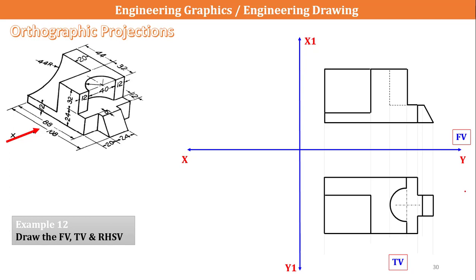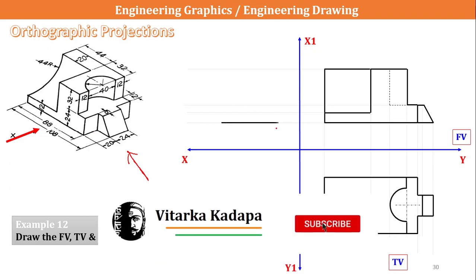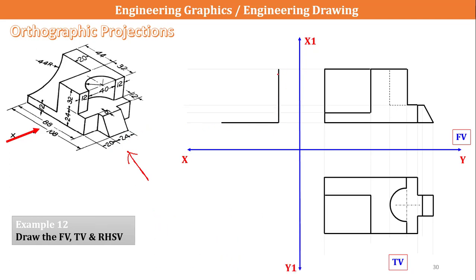Next I have to draw the side view. For the side view, I draw the projectors first. They are asking for the right-hand side view, so I am viewing from this side. This part is visible, and all the small blocks are visible to me. First, I take the outer reference line: 20 plus 24 plus 20. Then a vertical reference line joining this height: 24 plus 24 plus 32. I complete the entire enclosing box.